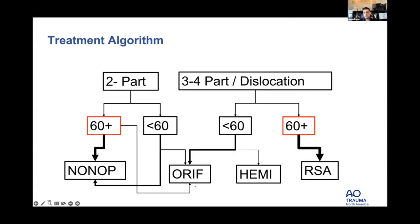After a few months the tuberosities are healed and patients can achieve a high level of function — forward elevation of 125 degrees at 3 months for a 70-year-old is really quite good, and they continue to improve up to about the one-year mark. My treatment algorithm: for two-part fractures in younger patients, mostly non-op or ORIF; in older patients, mostly non-op except for those that are completely displaced more than 100 percent. For three- and four-part fractures and fracture-dislocations with high risk of failure, I typically fix them under age 60 and start thinking about reverse shoulder arthroplasty in older patients.